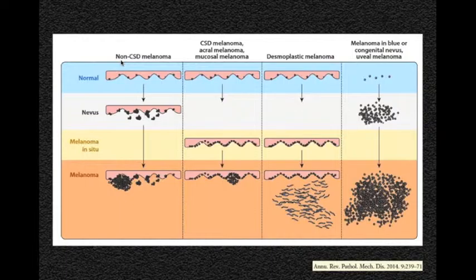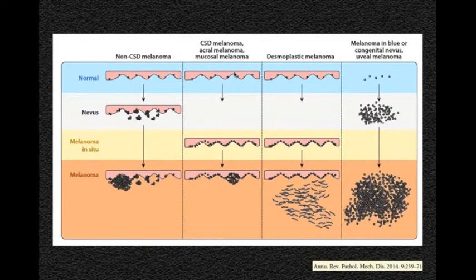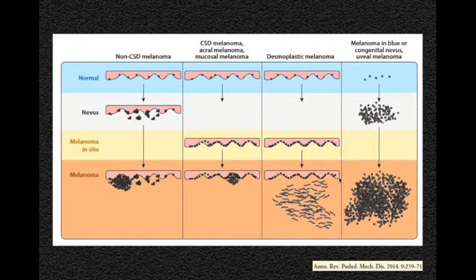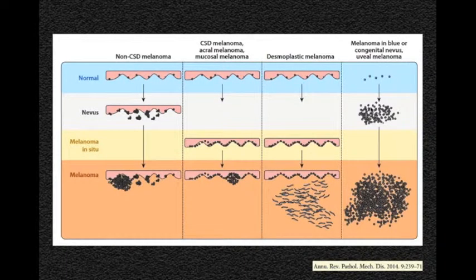In non-cumulative sun-induced melanomas, we have a nevus, and then genetic alterations will lead to melanoma in situ and an invasive lesion. In the case of acral-type mucosal melanomas, the epithelium is first involved, and then there will be vertical invasion to the skin. In desmoplastic melanoma, we think it is not epithelium-associated, although we have a population of atypical cells that fulfill the criteria of melanoma in situ in the epidermis. In melanoma arising in blue nevi or congenital nevi, they are usually arising from dermal nests, though in larger congenital nevi — like garment-type nevi — they give rise to these dermal-based tumors.